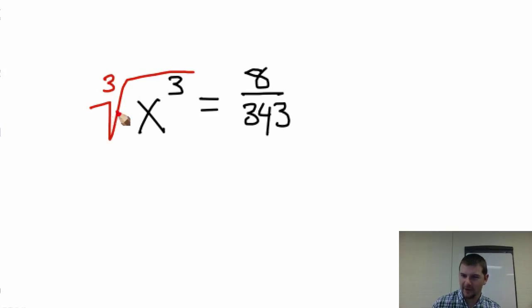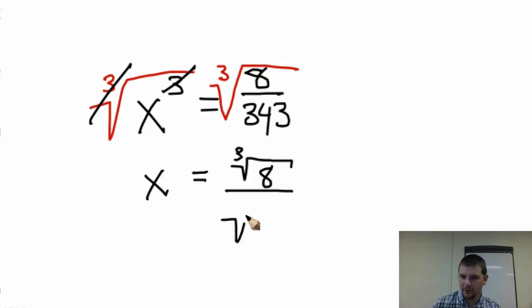The cube root will cancel out this X to the third power and leave us with just X. But what we do to one side, we must do to the other side to maintain the balance or truth of the equation. The cube root and the cube cancel one another out. Now we have X equals, and instead of rewriting this, I'm going to make a transition here. The cube root of the fraction will equal the cube root of the numerator over the cube root of the denominator.